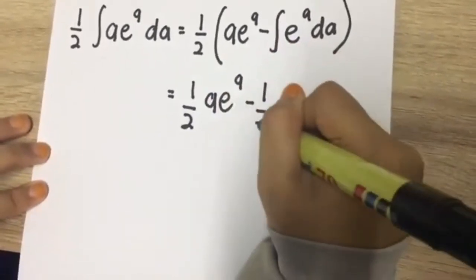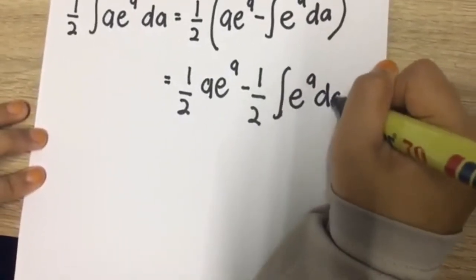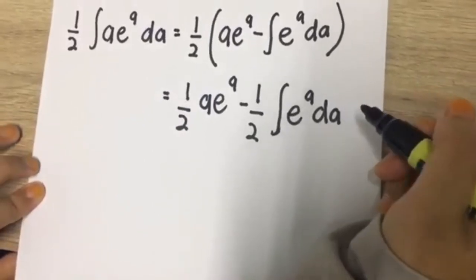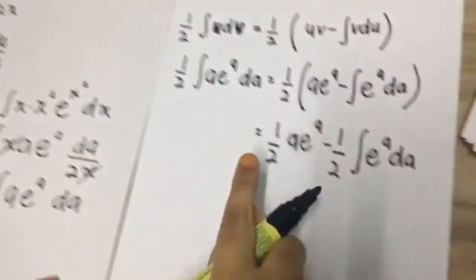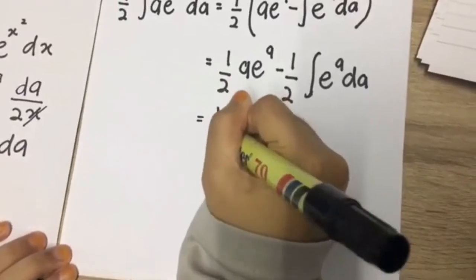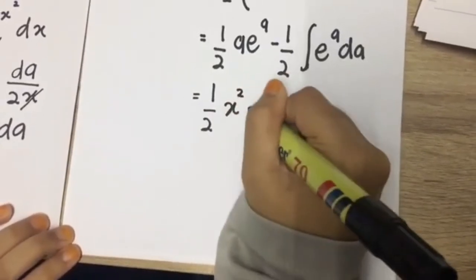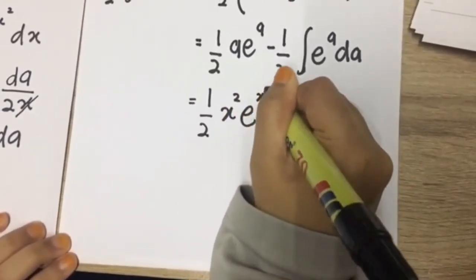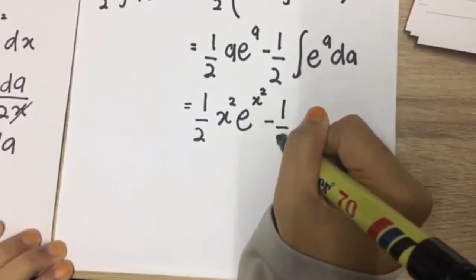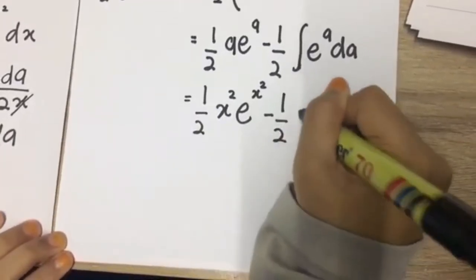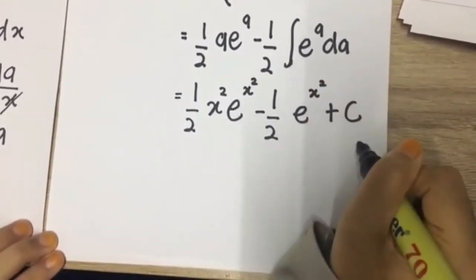We replace t with x²: 1/2 · (x²·e^(x²) − e^(x²)) plus C, which gives the final answer: 1/2 · x²·e^(x²) − 1/2 · e^(x²) + C.